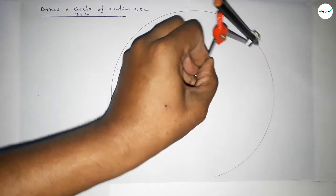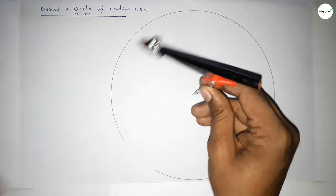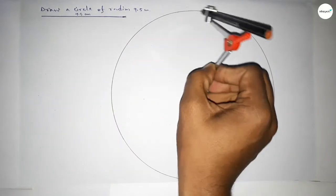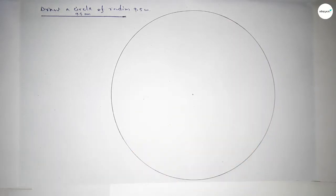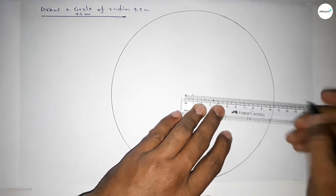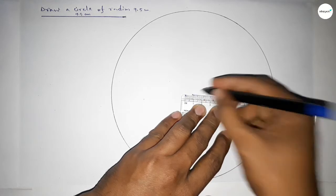Continue to draw the arc. So drawing the arc by this way and this represents a circle with radius 9.5 centimeters. Now joining this one, and this is the radius of this circle.